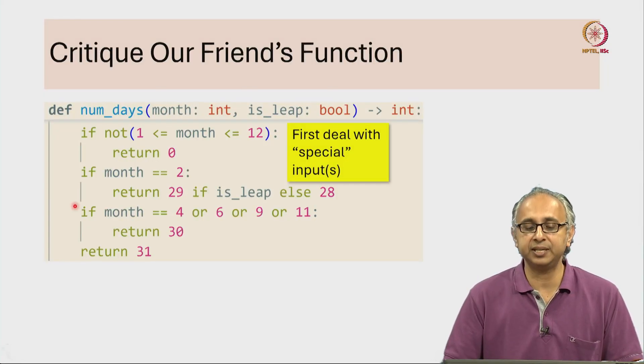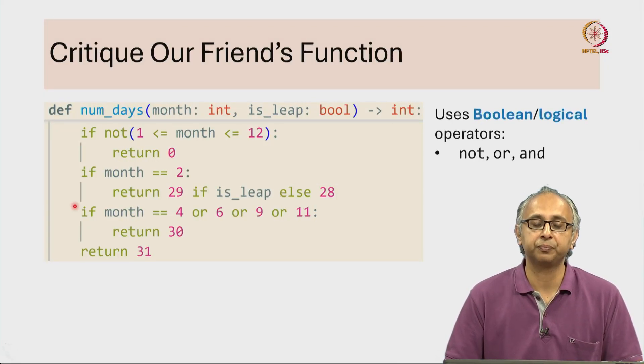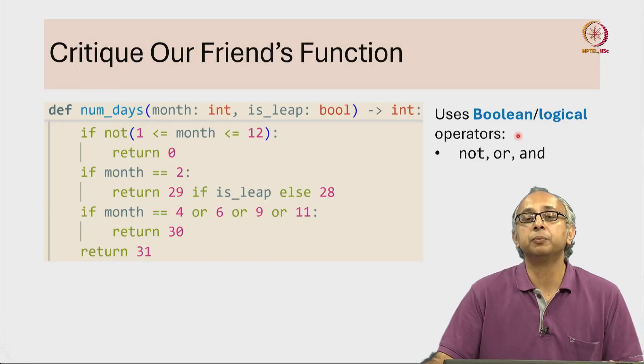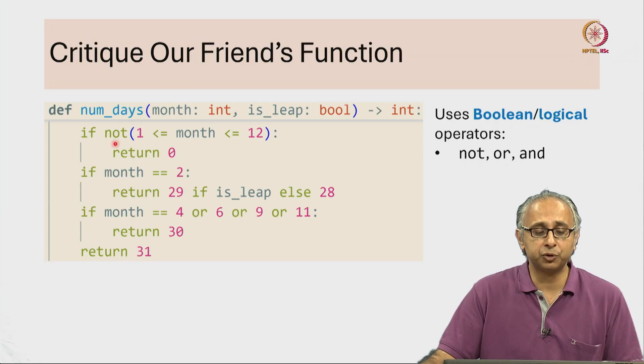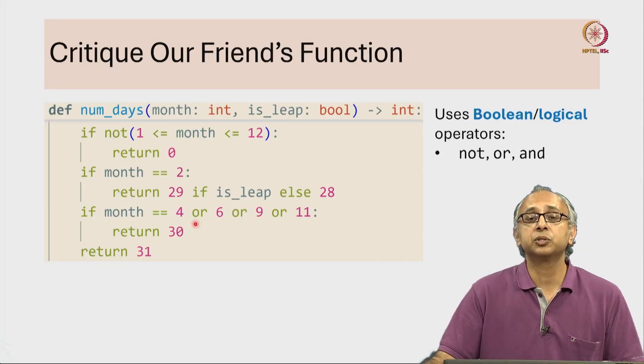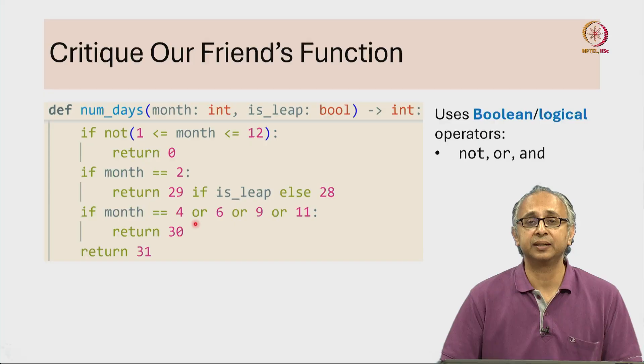Let us now try and understand some of the syntax that they have used. You will see our friend has used what are called boolean operators or sometimes they are called logical operators, and there are three of these: not, or, and. Although in this piece of code our friend has only used not and or.